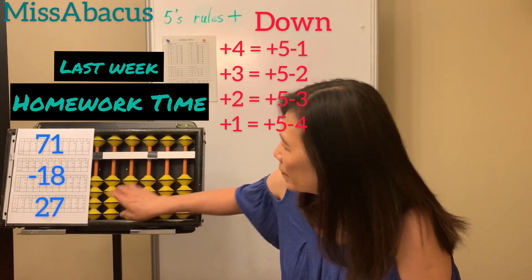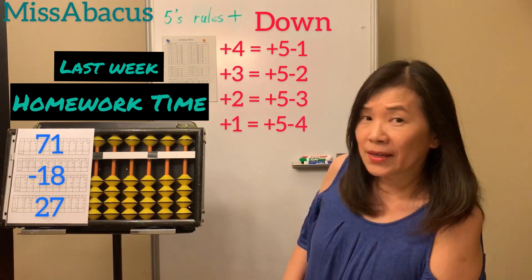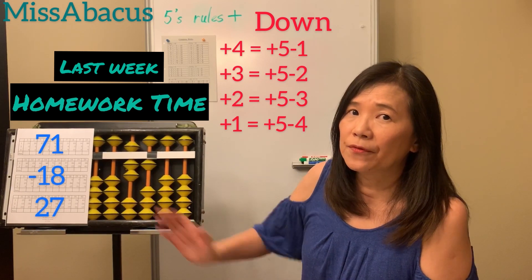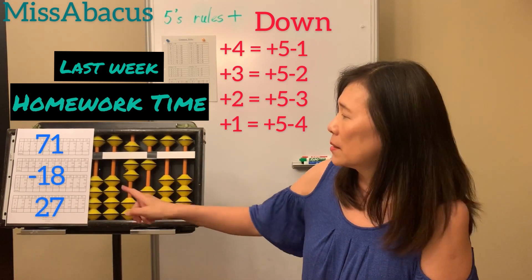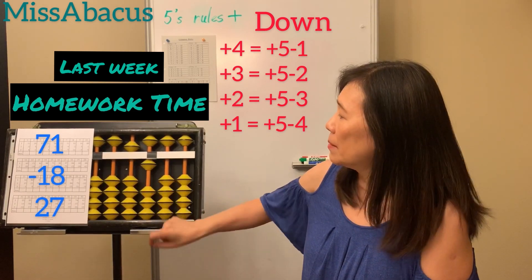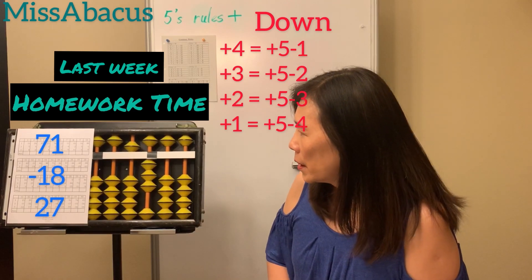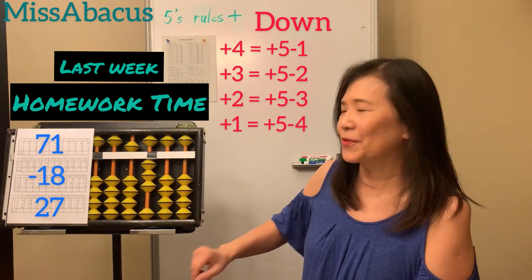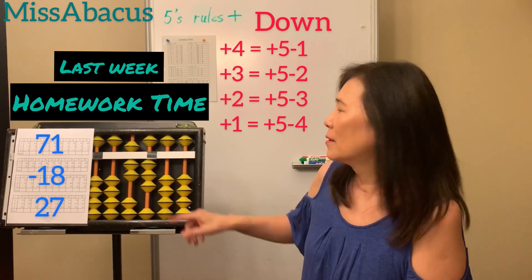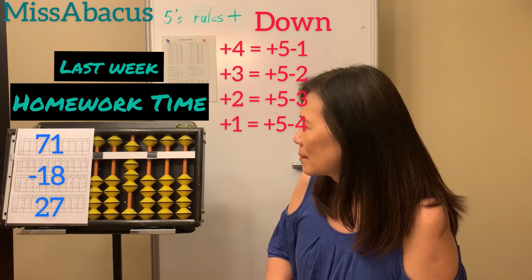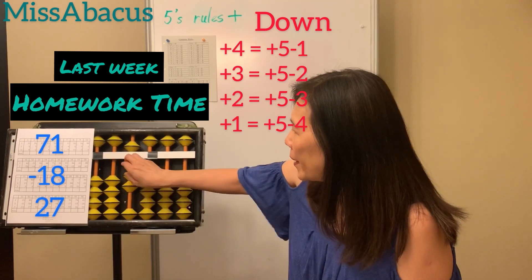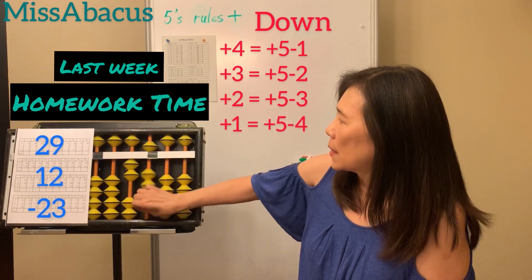Now let's do the bottom five problems. Number 36: 71 minus 18. From left to right, one by one. Minus ten first, then minus eight — not enough. Not enough, borrow: minus eight, minus ten, plus two. Next number plus 27: plus twenty first. How to plus seven? You only have six left — rule: minus three plus ten. Answer 80.